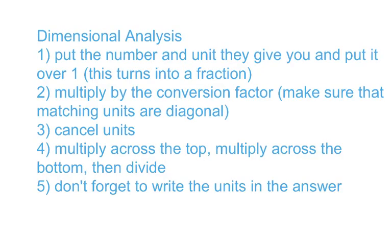The steps for using dimensional analysis are listed here. First, put the number and the unit they give you over a 1, turning it into a fraction. Then multiply by the conversion factor — these are the conversions on the PDF file in CAMS. You have to know your conversion factors. When you multiply by that conversion factor, make sure the units are diagonal: if you have cups at the top, you need cups at the bottom on your second fraction so you can cancel units.